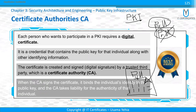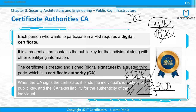After creating the certificate, this certificate will be signed or encrypted with the private key of the CA. If I want to read the information encrypted with the private key of the CA, the key that can decrypt it is the public key of the certificate authority.